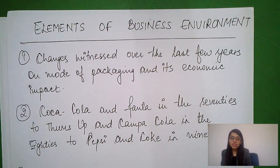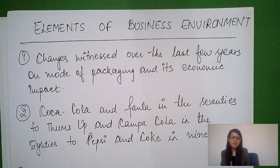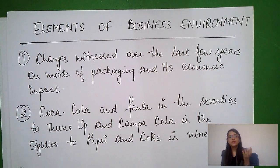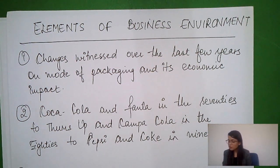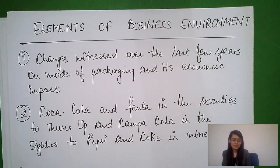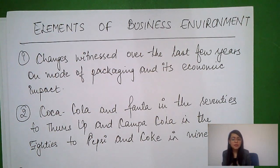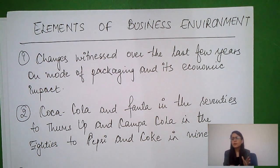For the business environment project, there are a total of 12 topics from which you choose one. You will study specifically from your project. For example, if your topic is changes witnessed in packaging over the last few years and its economic impact, they can ask how packaging has changed and you should be well aware of that content.